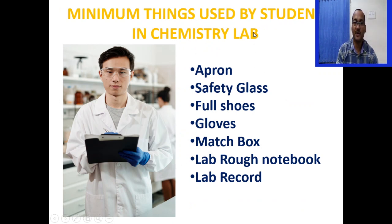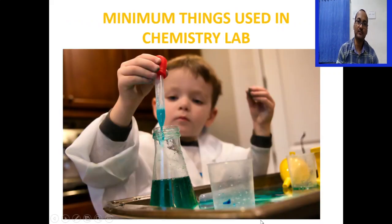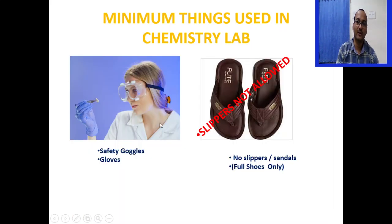These are the minimum things a chemistry student must use inside the chemistry lab: apron, safety glasses for eye protection, full suit, gloves, matchbox, lab rough notebook, and lab record. The student must wear an apron. Safety glasses and gloves are mandatory. No slippers or sandals inside the chemistry lab — always wear full shoes because acid spilling on your leg can damage your skin.